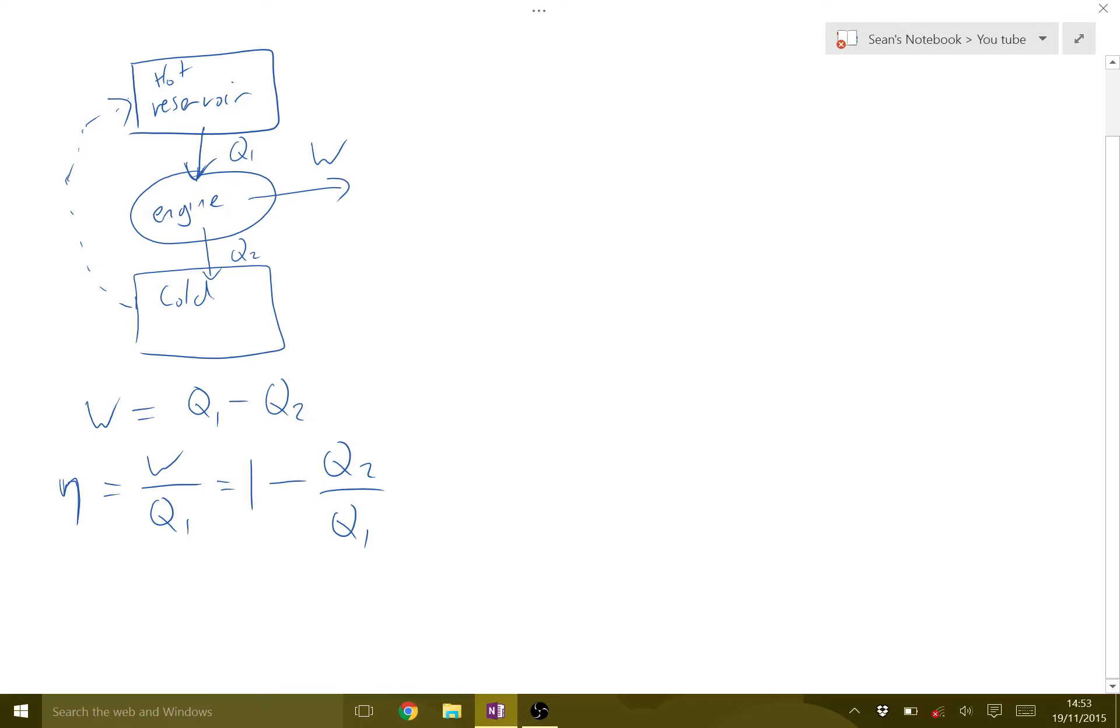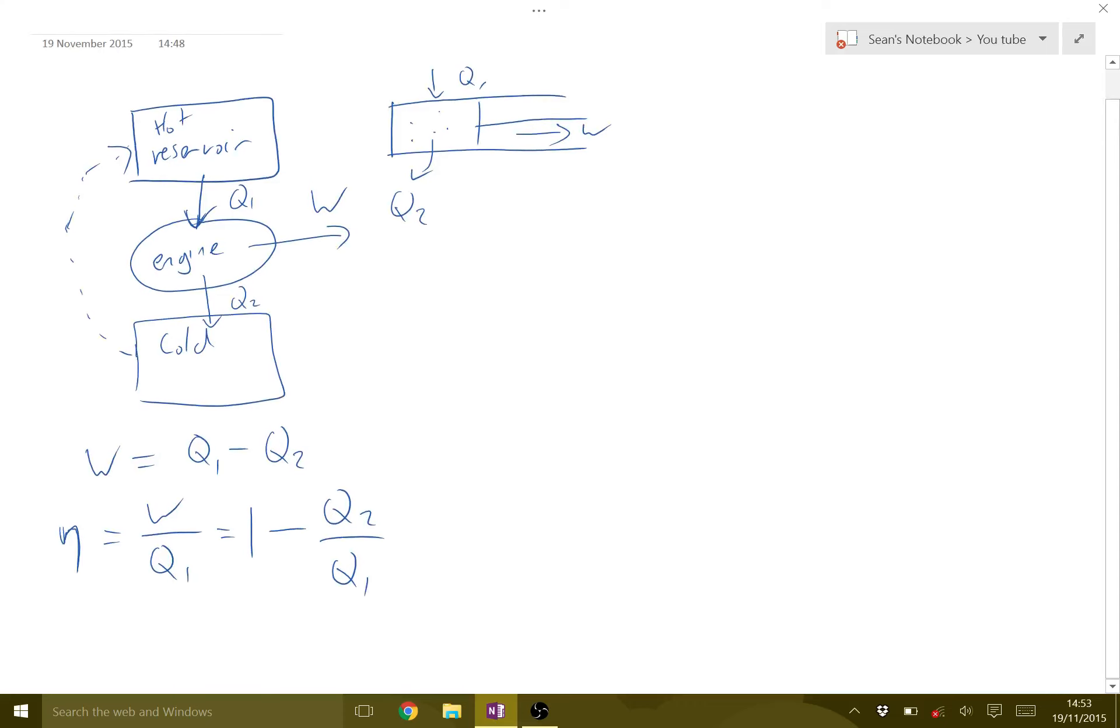The important thing here is to understand what the engine is. We start with a hot reservoir. From the hot reservoir, we put some heat energy into our engine. We get some useful work out, but then we lose some energy to heat as well, which goes to the cold reservoir. You can imagine that this engine is our piston. We have Q1 going in. Our useful work done will be pushing the piston, and then there'll be some waste heat out. And then we need to do something to get the system back to the start.